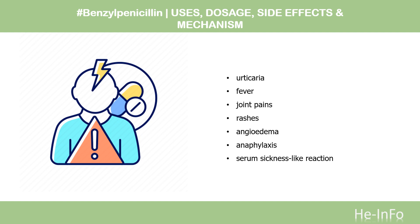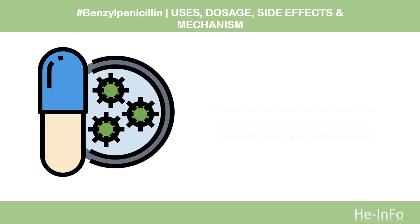Rarely, central nervous system toxicity including convulsions, especially with high doses or in severe renal impairment, interstitial nephritis, hemolytic anemia, leukopenia, thrombocytopenia, and coagulation disorders. Also reported: diarrhea, including antibiotic-associated colitis.